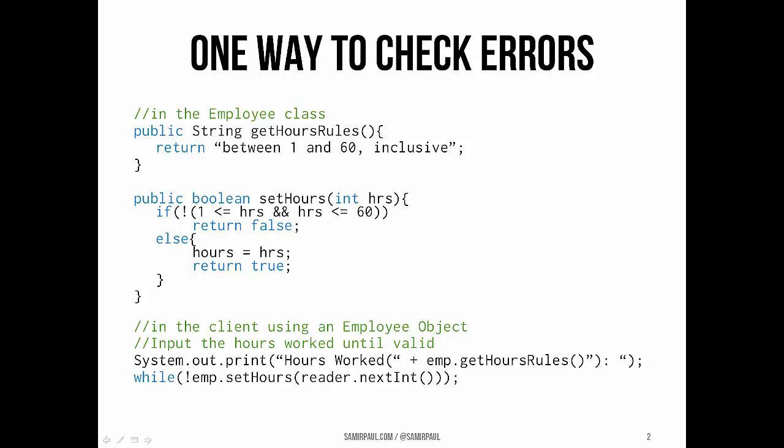Here's the first one: getHoursRules. It's a simple method that returns a string, takes no parameters, and that string is just a statement of the rules about hours — the number of hours an employee works must be between 1 and 60 inclusive. Then in the setHours method, which takes a single int hours as a parameter and returns true or false, if we break the rule about hours, we'll return false. Otherwise, we will successfully set the instance variable hours to the parameter hrs and return true, indicating that it worked.